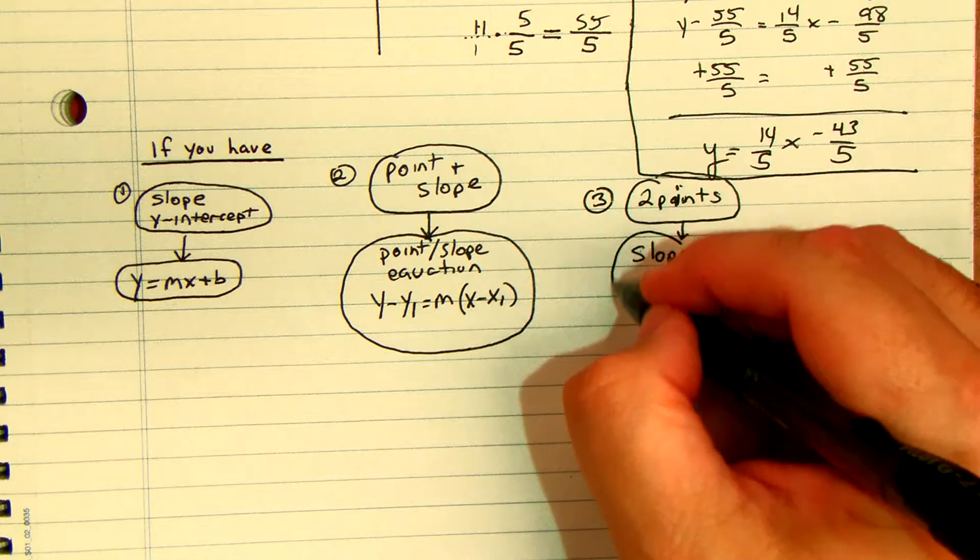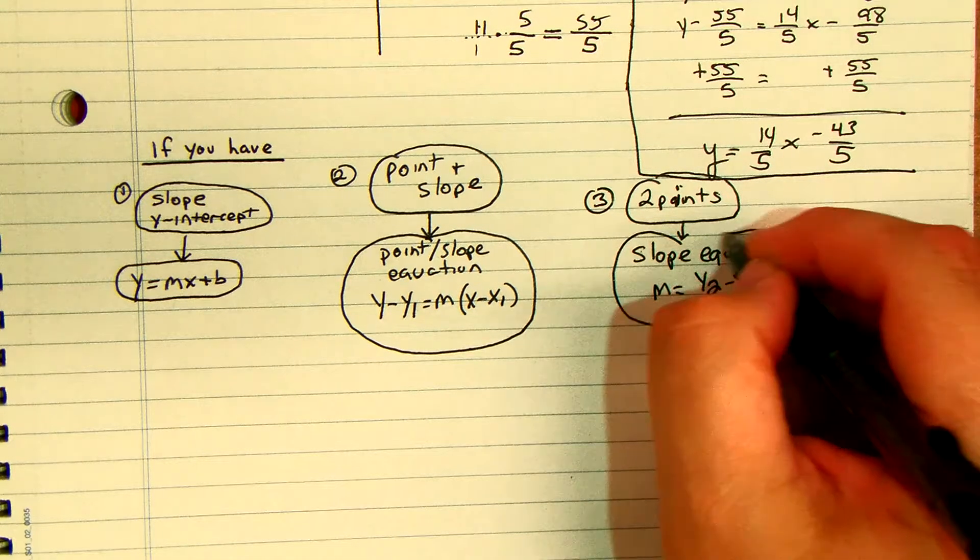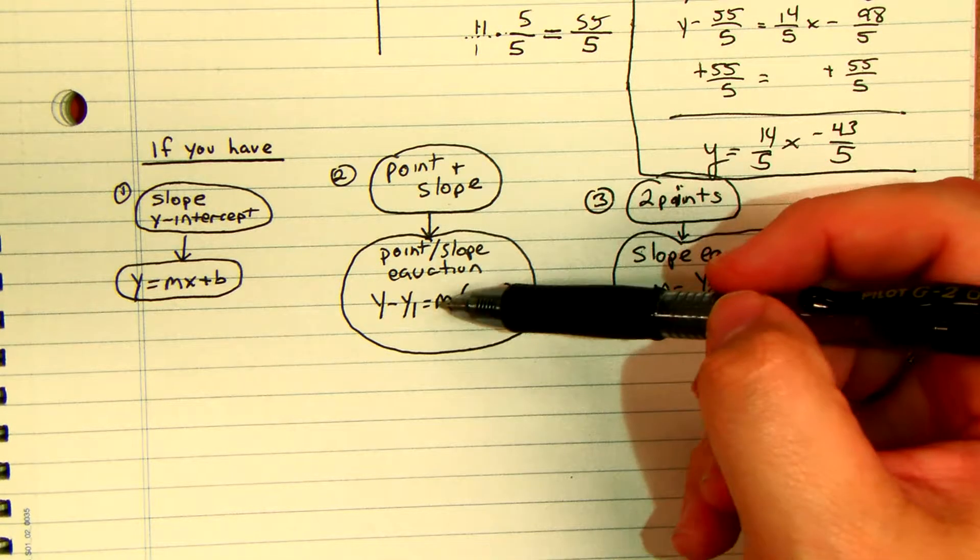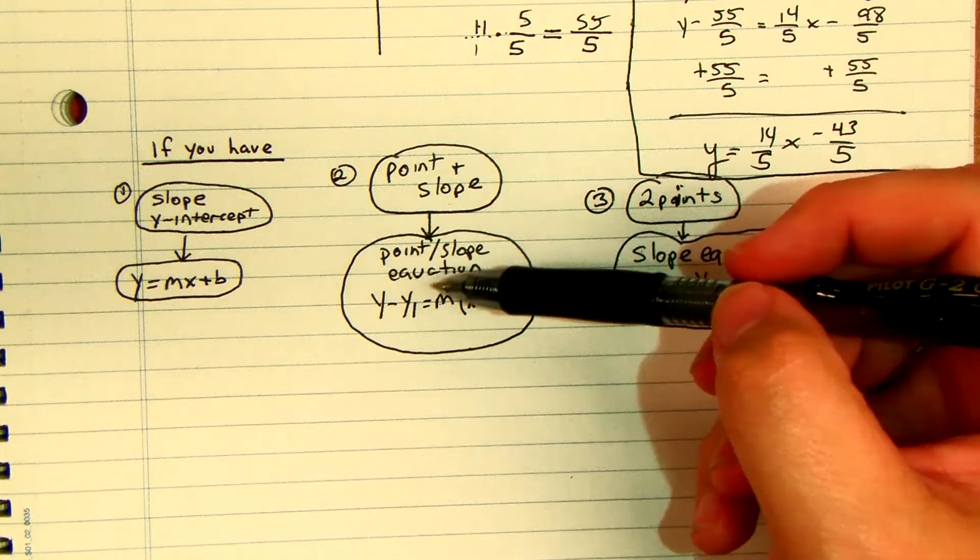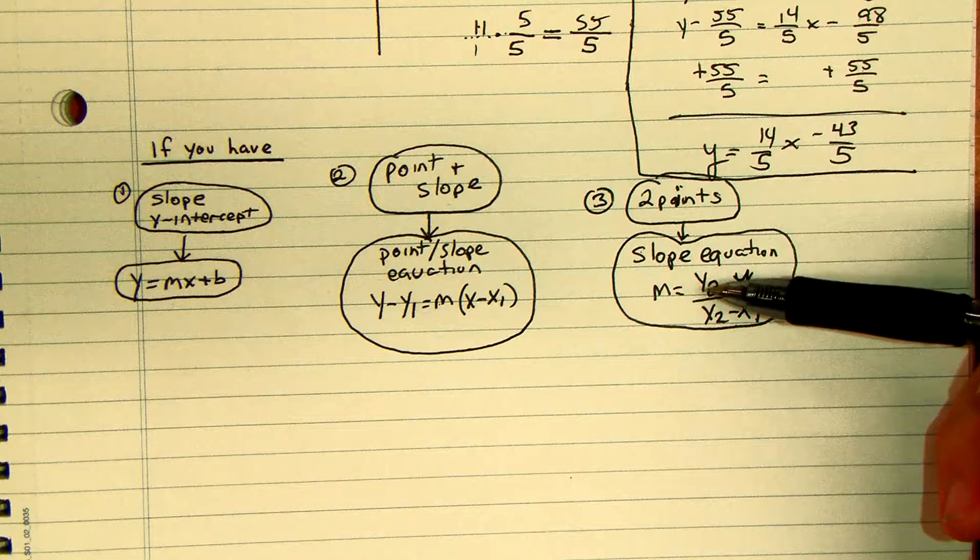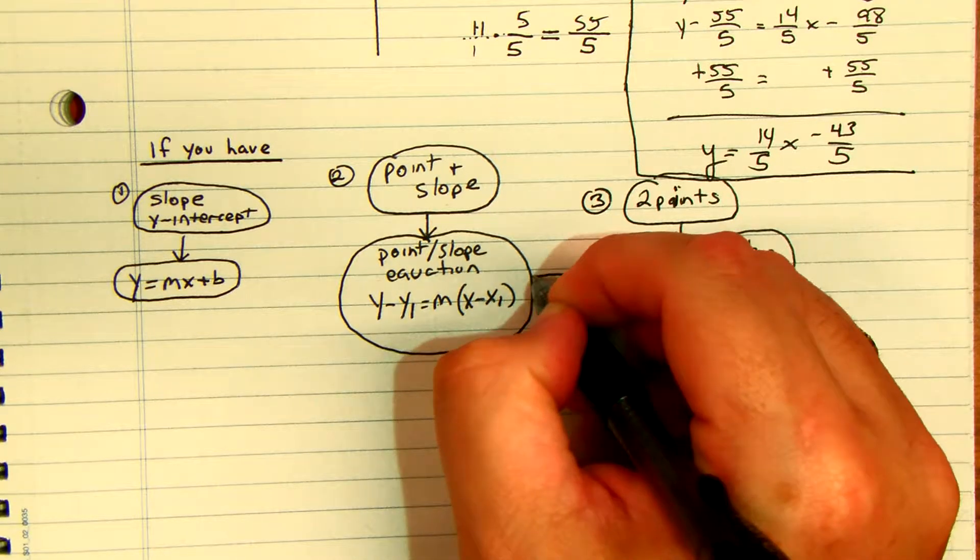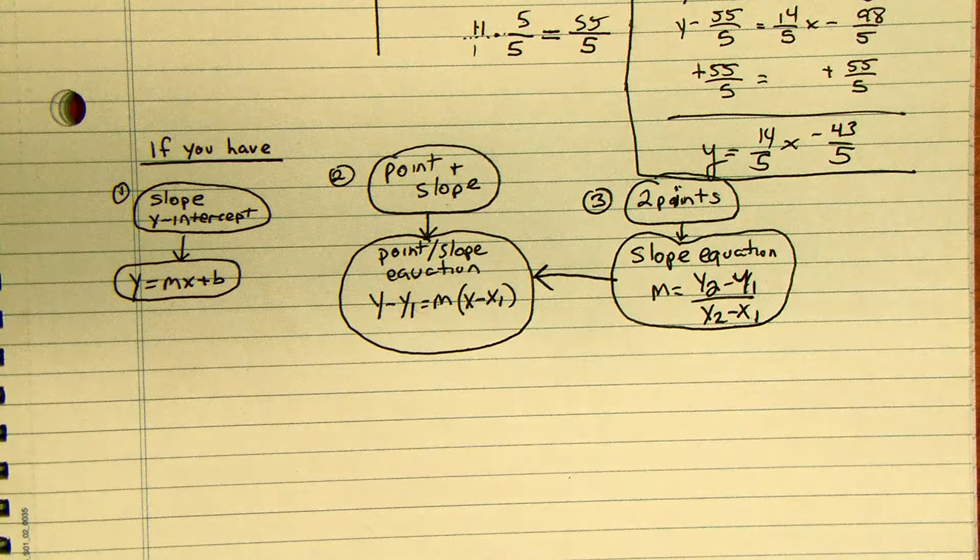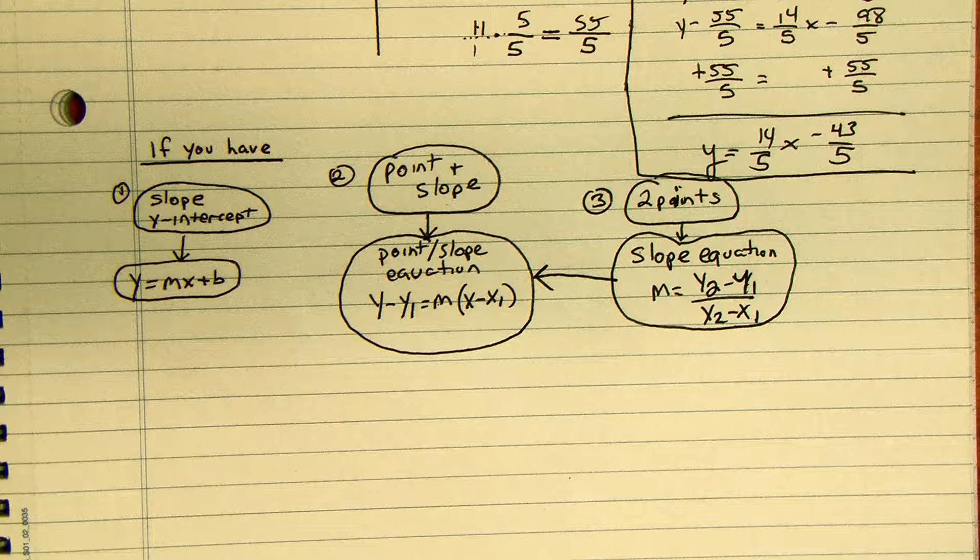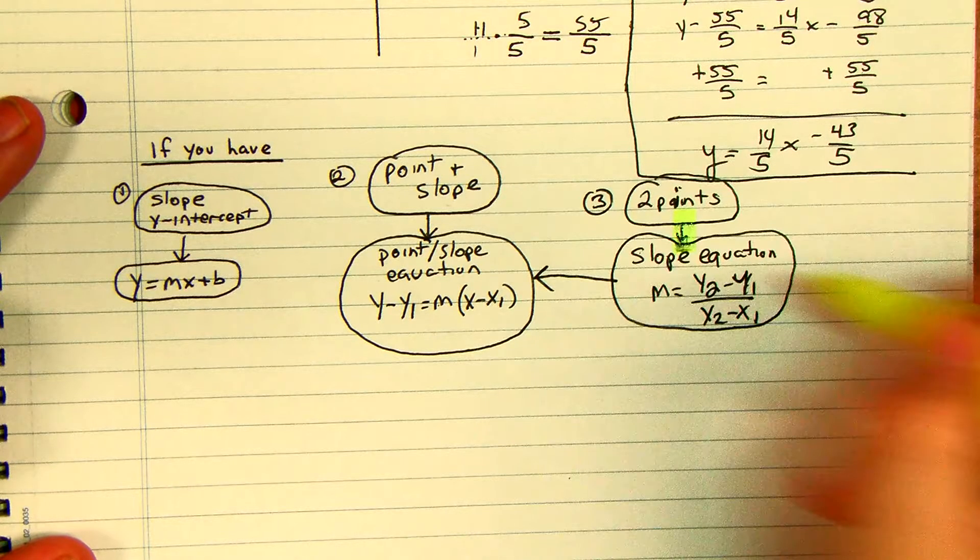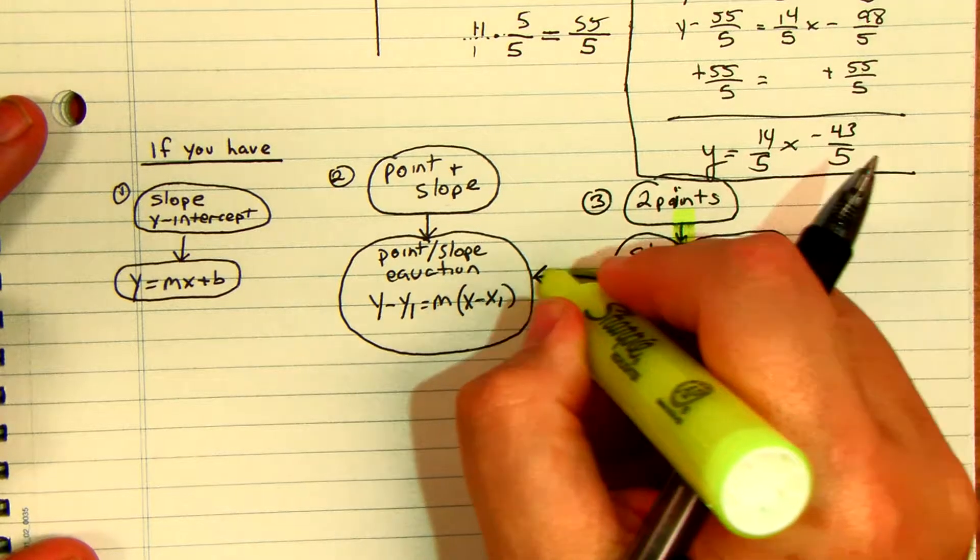So you've got to calculate slope first. See, this guy you have a slope so we're able to go with the slope and we have the point. This guy we don't have a slope so we have to calculate a slope. And then we go here. Then you go to the point-slope equation. So with two points we're going to first calculate a slope and then we're going to go to the slope equation.